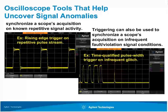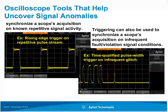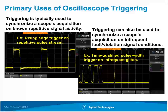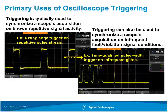The most common type of triggering engineers use today is edge triggering — a very non-discriminating type of triggering used to trigger on any occurrence of a known repetitive input signal. But oscilloscope triggering can also be used to synchronize acquisitions on suspected false or signal violation conditions. The screenshot on the left shows triggering on any rising edge of a repetitive digital pulse. The screenshot on the right shows triggering on a narrow and infrequent glitch using time-qualified pulse-width triggering — when this narrow glitch occurs, the scope will catch it.